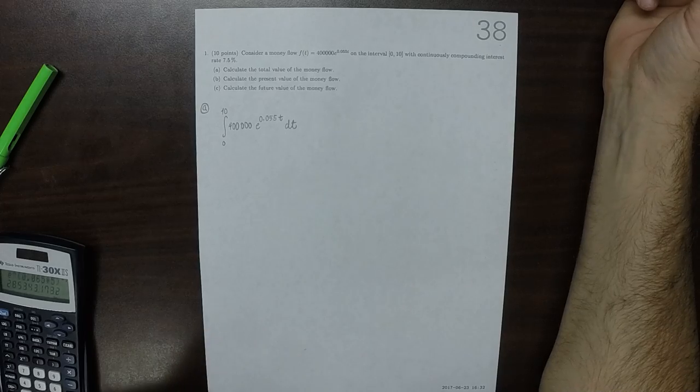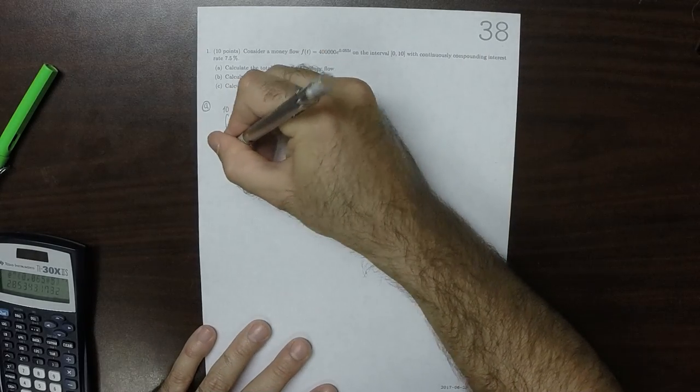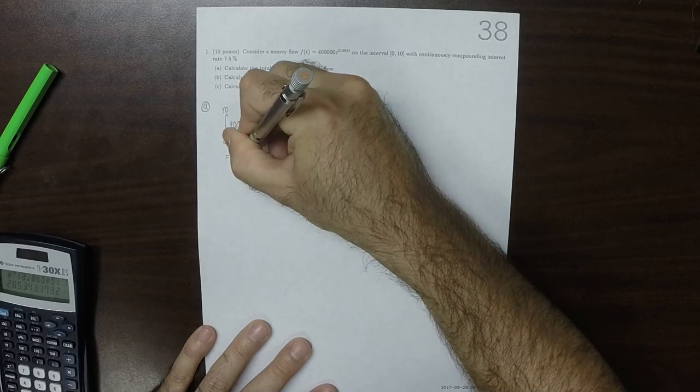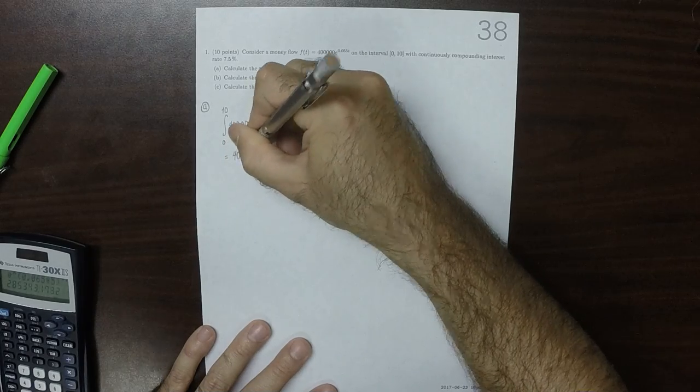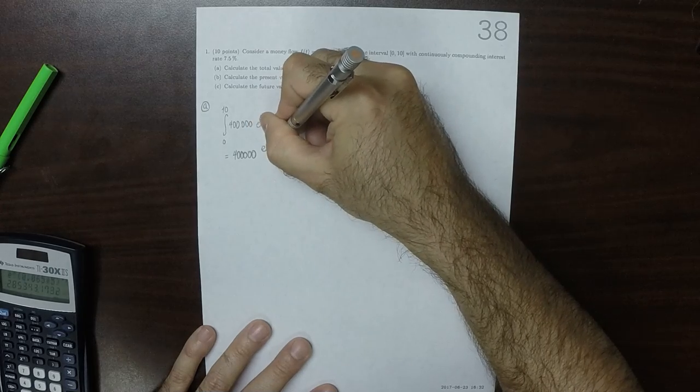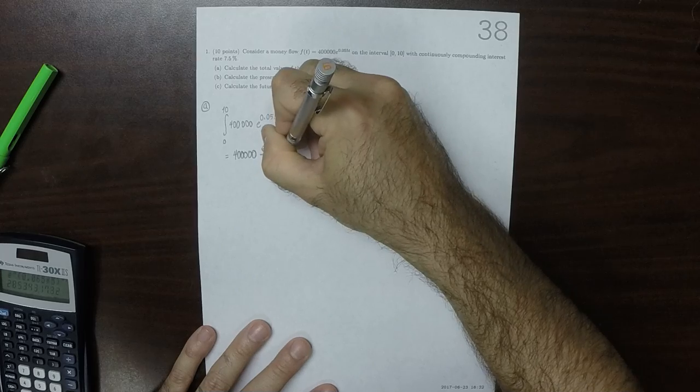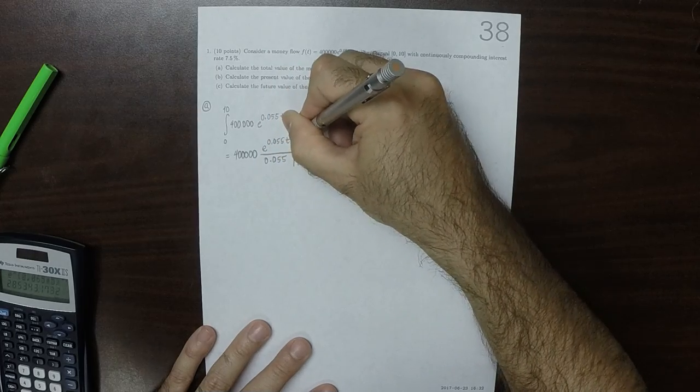That's something we can integrate directly. So that is 400,000 exponential 0.055t, divided by 0.055, evaluated from 0 to 10.